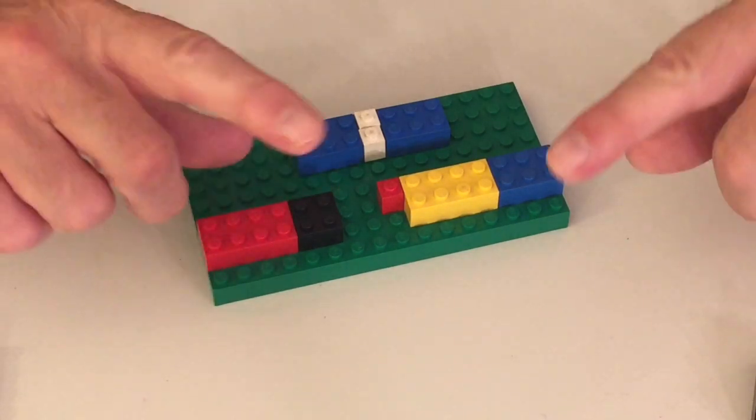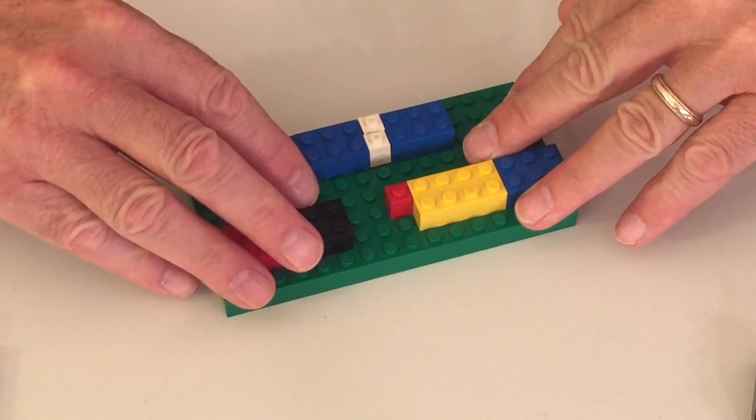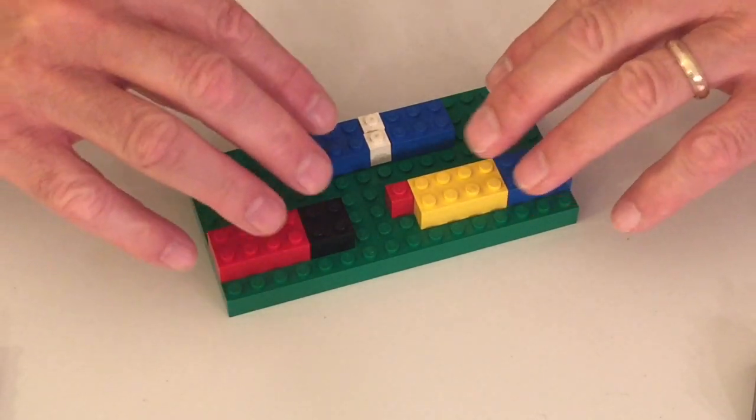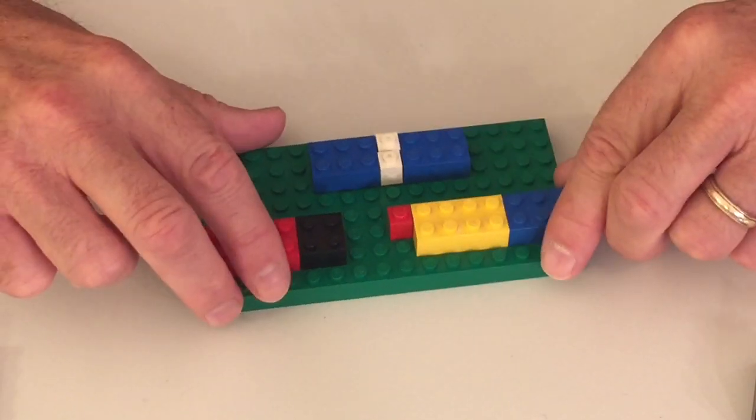And now you can put this on pause and color what you've done. And when you're finished, come back and push play. And I'll show you how I've colored it and what I've written down. And we'll also mark our progress chart.